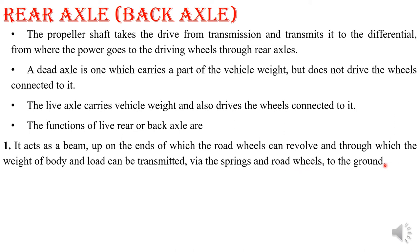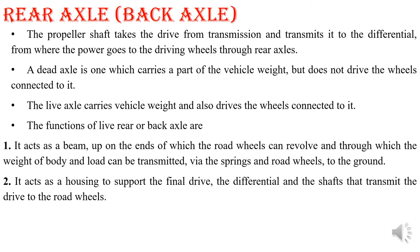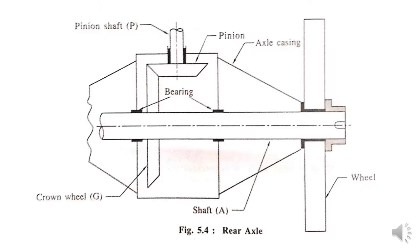The function of the live or rear axle: first, it acts as a beam upon the ends of which road wheels can revolve, and through which the weight of the body and load can be transmitted via springs and road wheels to the ground. It takes the load and the wheels revolve, transmitting the weight of the body to the ground through springs — that means suspension, which may be leaf spring or shock absorbers. Second function: it acts as a housing to support the final drive, differential, and shaft, and transmits the drive to the road.